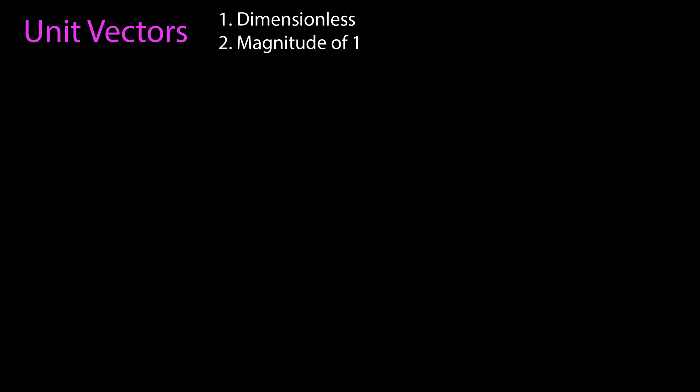In this video, we're going to talk about unit vectors. Unit vectors are vectors that have two characteristics. They are dimensionless, they don't have any units, and they have a magnitude of 1.